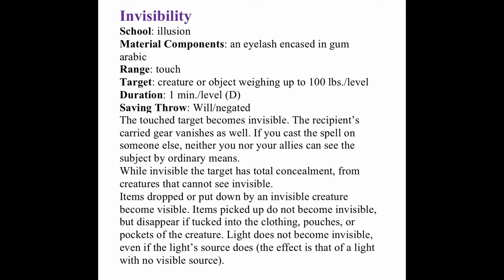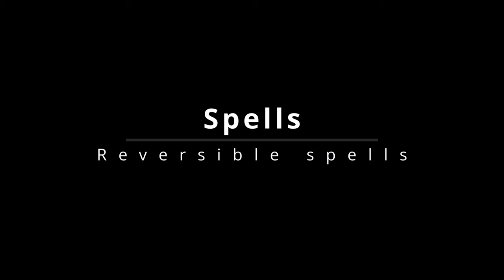One last example is Invisibility — a rank 2 spell from the school of Illusion. It has a listed material component: an eyelash encased in gum arabic. This is not a requirement, but if the caster expends it during casting they gain a +1 bonus on the spell power check. It has a range of touch, targets a single creature or object, and has a duration of one minute per level.